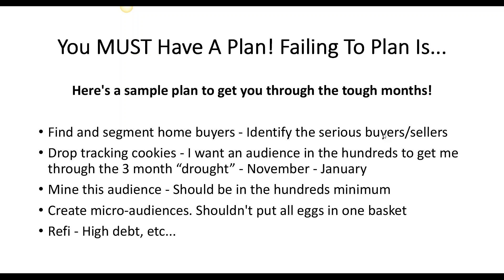Failing to plan is planning to fail — we've all heard that. So let's look at a sample plan to get through the tough months. The first thing I would do to have my best months ever is to find and segment serious home buyers — and that includes sellers, because most sellers are buying another home anyway and will need a loan officer. After getting these people to raise their hands and identify themselves, the next thing I'd do is drop tracking cookies.